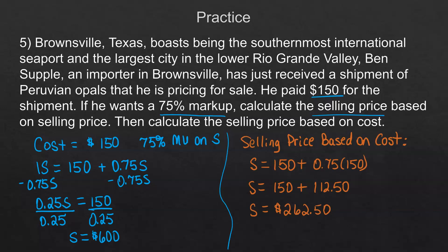You can see that there's a big difference depending on which base we use, even when using the same percent. One other thing to point out: 75% of the selling price — if we take 600 times 0.75, that's $450. That's a $450 markup. And 600 minus 150 is also $450, which confirms it.